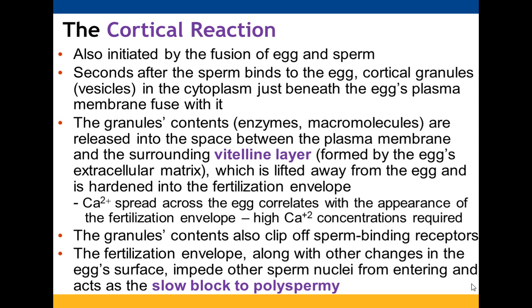Calcium ions are needed to make the cortical reaction possible. Studies have shown that as calcium spreads across the egg, the fertilization envelope begins to appear, so getting calcium there is critical. The cortical granules also contain molecules that cause the sperm-binding receptors to be removed from the egg cell membrane. The fertilization envelope and loss of receptors together prevent additional sperm nuclei from entering — this is the slow block to polyspermy because it is more lasting.